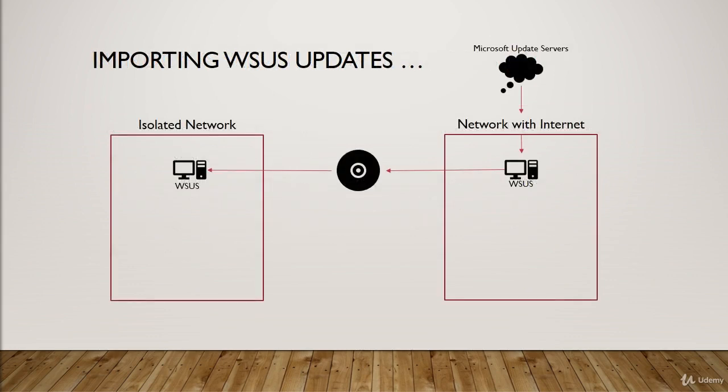Here's an example of importing WSUS updates. On the left we have an isolated network — certain networks contain sensitive information and it's better for them to not be connected to the internet. The way you handle updates is by having another network that is connected to the internet but doesn't contain the same sensitive information. You get a WSUS server configured on that internet-connected network, download the updates from Microsoft servers, then transfer those updates via DVD or USB drive over to the isolated network, which can then pass out those updates.